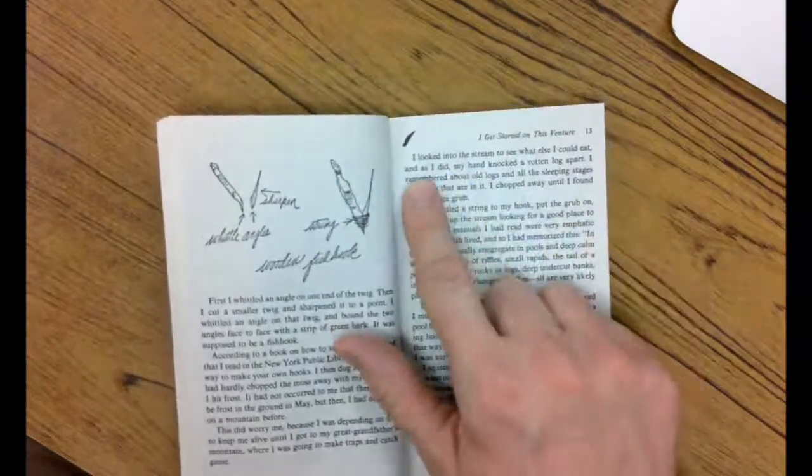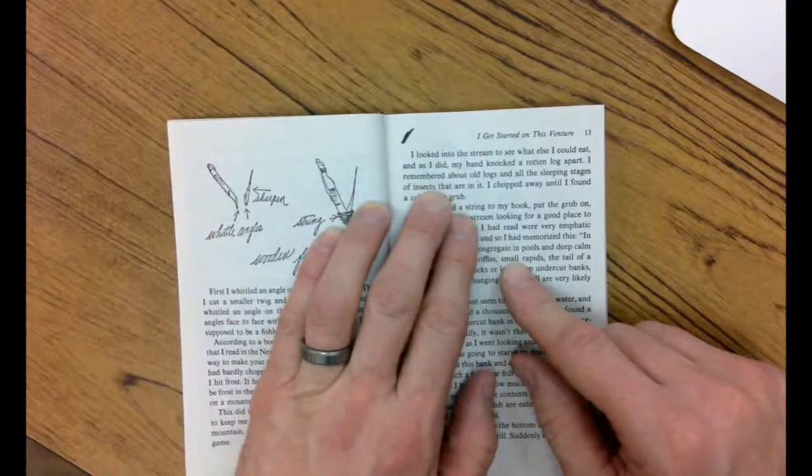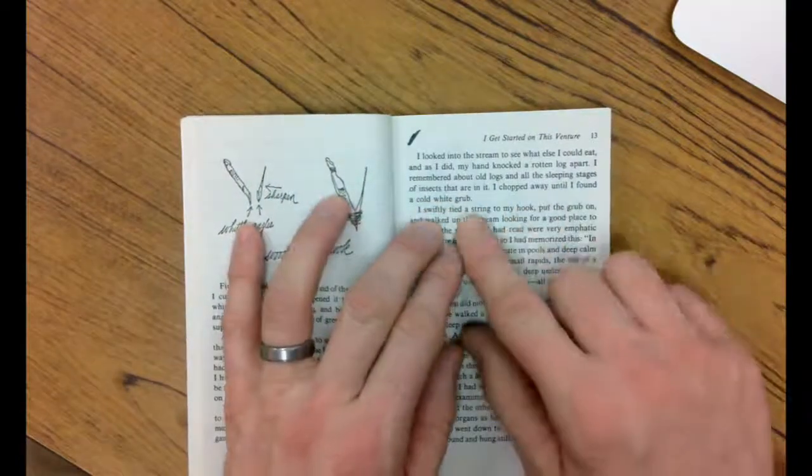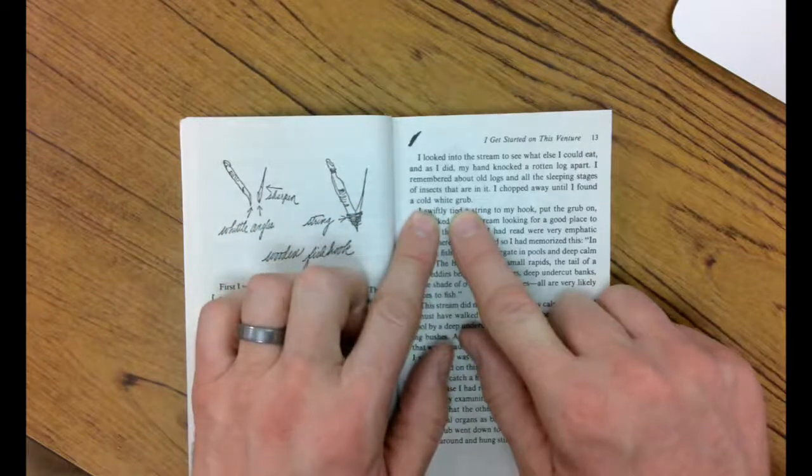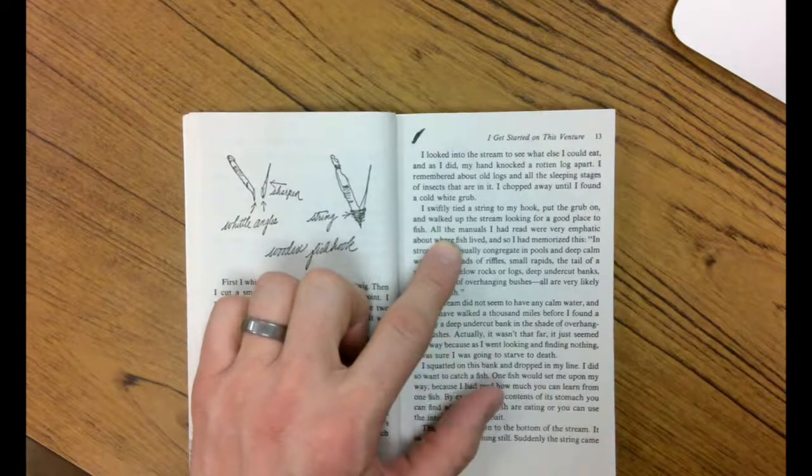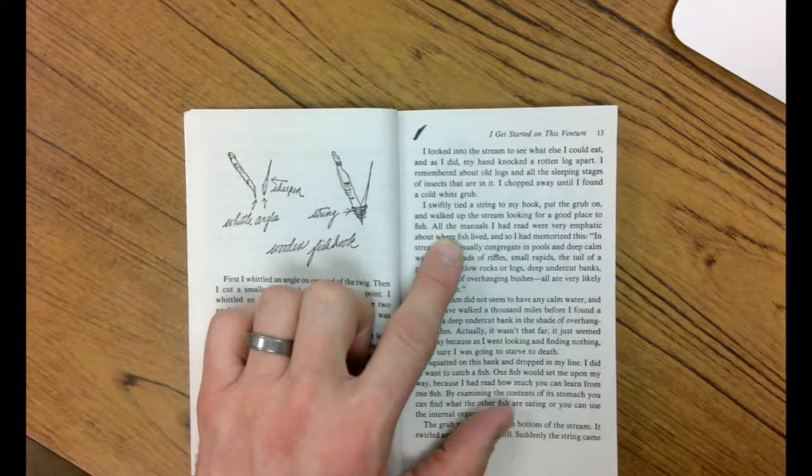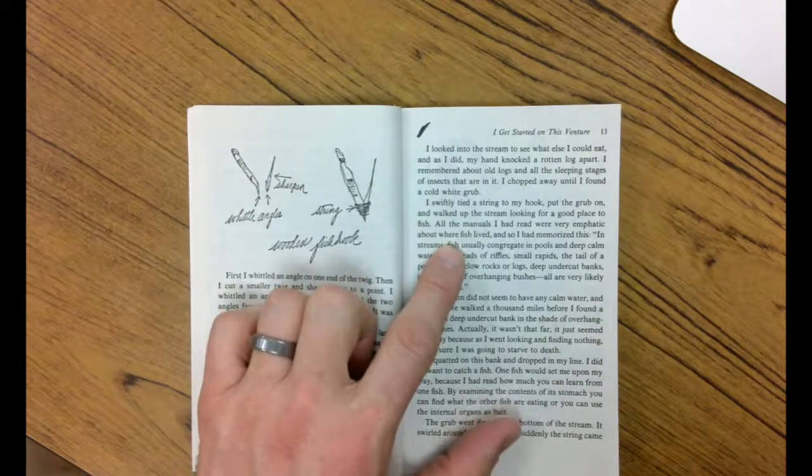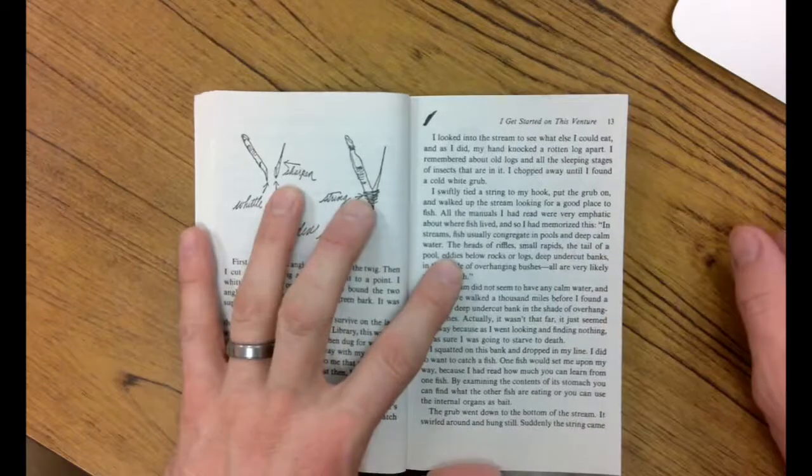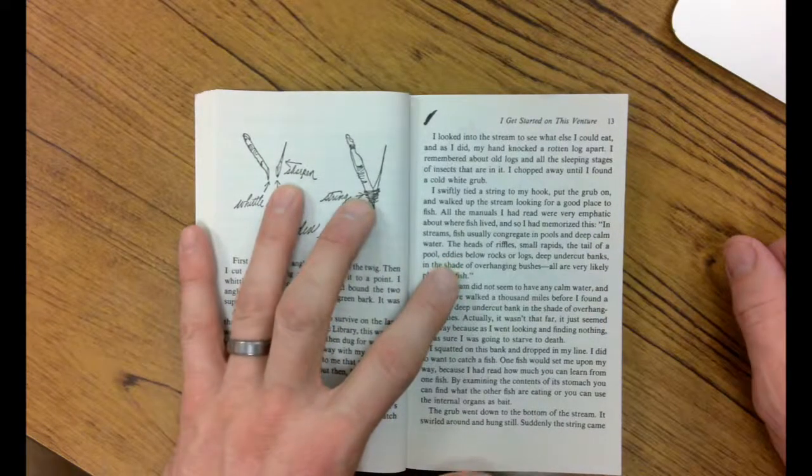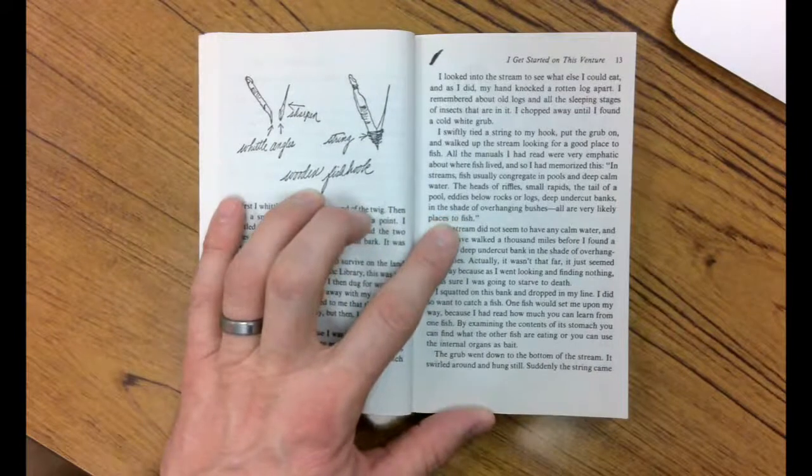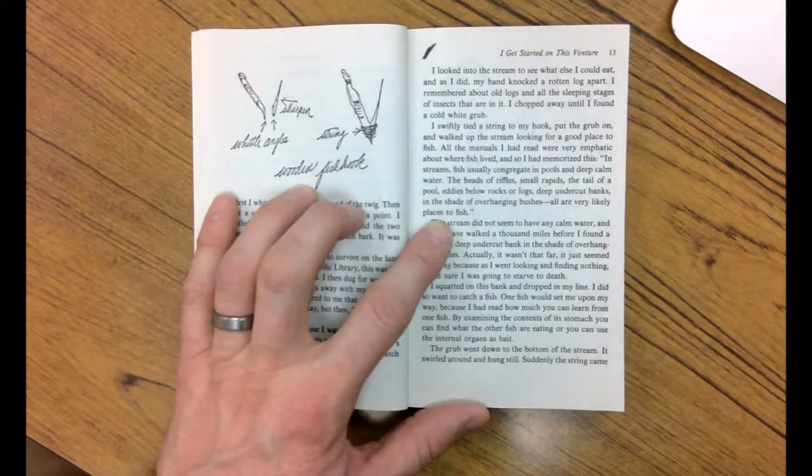I looked into the stream to see what else I could eat. And as I did, my hand knocked a rotten log apart. I remembered about the old logs and all the sleeping stages of insects that are in there. I chopped away until I found a cold white grub. I swiftly tied a string to my hook and put the grub on it. I walked up the stream looking for a good place to fish. All the manuals I had read were very emphatic about where fish lived, and so I had memorized this. Here's where they live: In streams, fish usually congregate in pools and deep calm water, the heads of riffles, small rapids, the tails of pools, eddies below rocks or logs, deep undercut banks, in the shade of overhanging bushes - all are very likely places to fish.